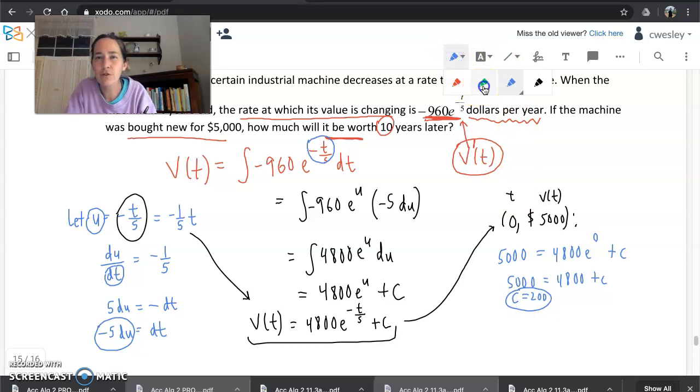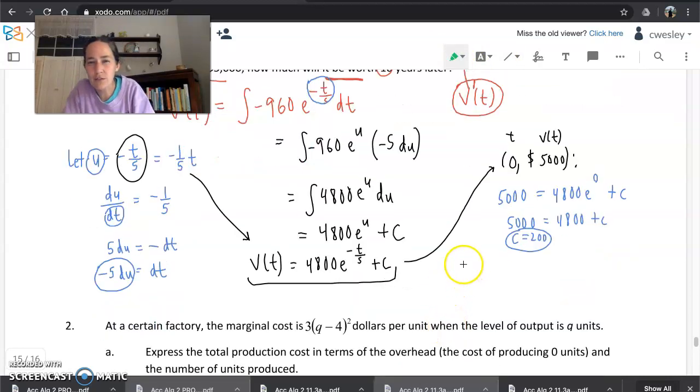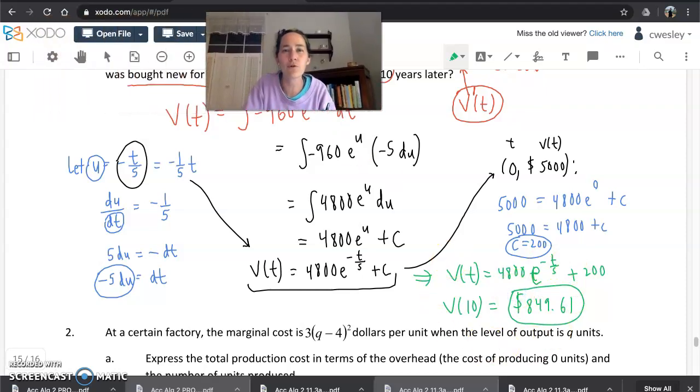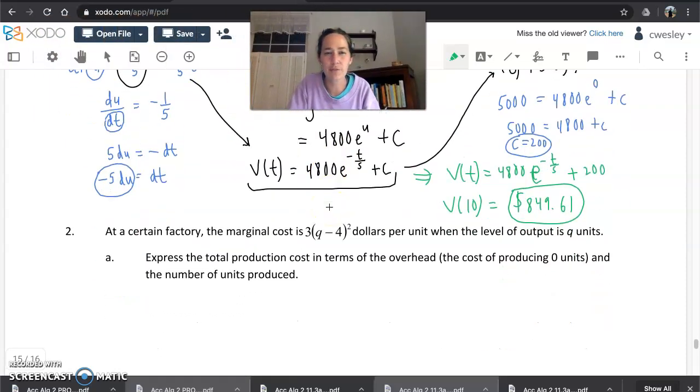And that should help us get a full out function. So our value function is going to be v of t equals, well, it's this stuff here with c plugged in. So 4800 e to the negative t over 5, sorry that's a bit sloppy, plus 200. And then take what you wrote there. Let's plug in. They want to know the value in 10 years. We want v of 10. Go ahead and use a calculator. Type it in. We'll put it in dollars and cents. Roughly $849.61. So same steps from the applications that we've seen before, but a little u substitution in the mix.